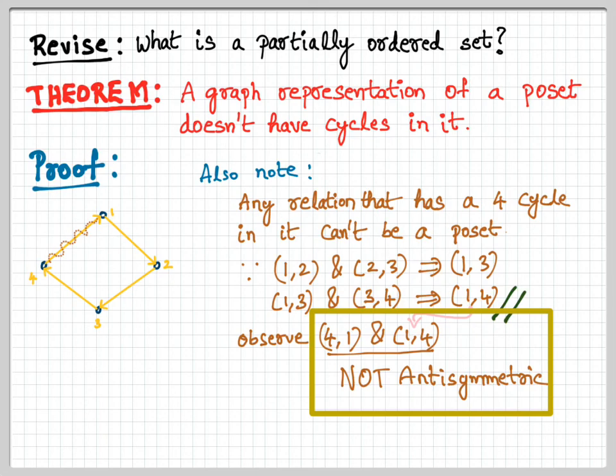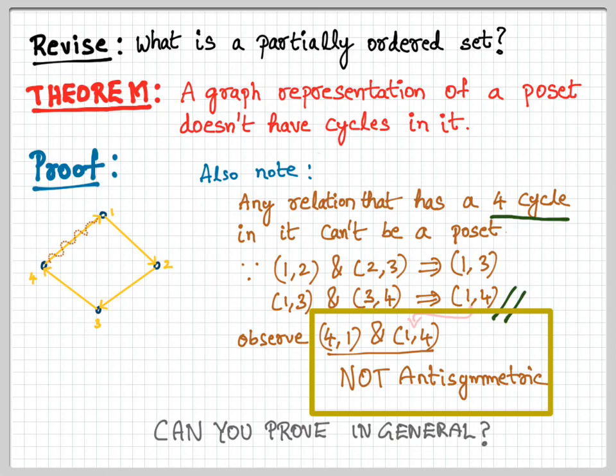In fact, you can show that a poset cannot have a five-cycle, a six-cycle, or in general any k-cycle. The proof in general will have more details, but the core idea is exactly what was just explained.